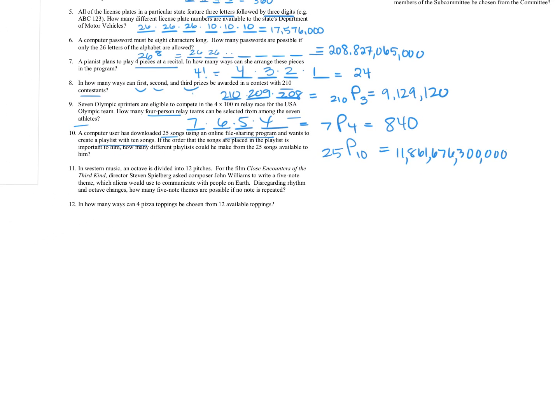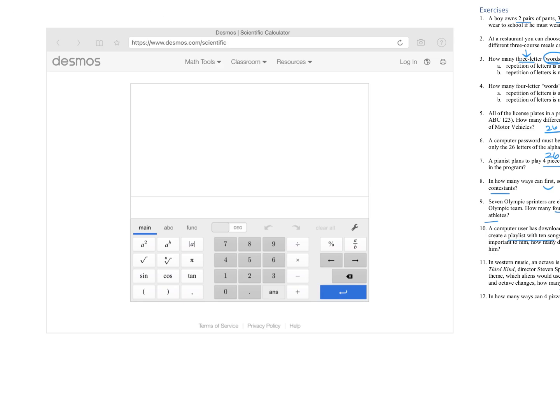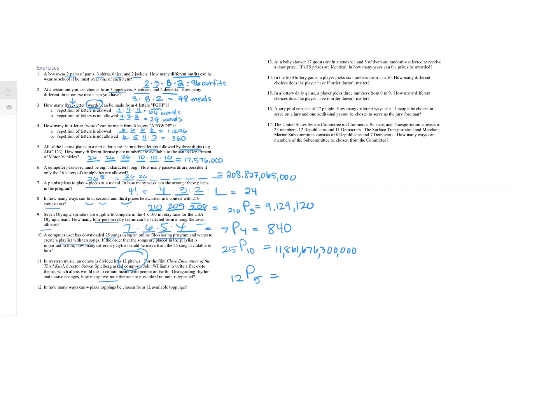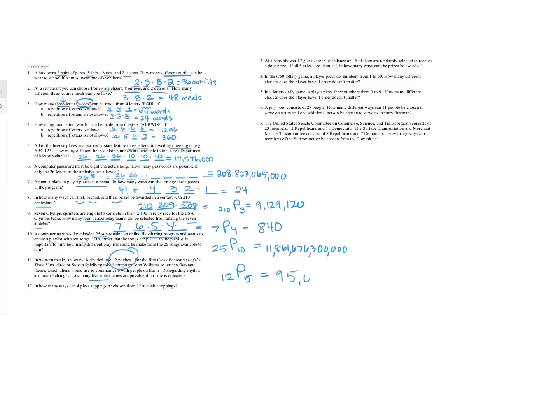I'm going to write it down over here. It would be this huge number. And again, scientific notation is okay, but we need to make sense of it. And so just kind of seeing that that huge power of 10 means it's going to be a quite large number, which you can see there. All right. For number 11, it says in Western music, an octave is divided into 12 pitches. For the film Close Encounters of the Third Kind, director Steven Spielberg asked John Williams to write a five note theme, which aliens would use to communicate with people on earth. Disregarding rhythm and octave changes, how many five note themes are possible? So if we have these 12 different pitches, we're going to do 12P5.